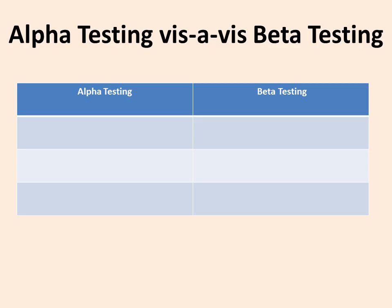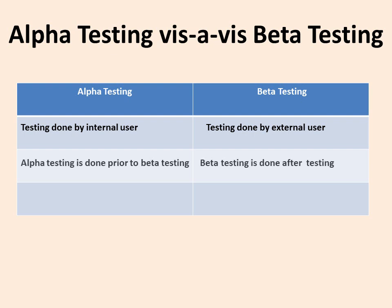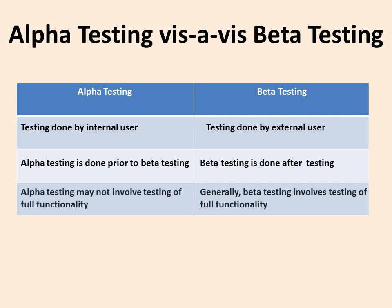Alpha and beta testing: alpha is done by internal users, beta is done by external users. Alpha is done first, and beta follows. Alpha may not involve full functionality testing, whereas beta generally involves testing of full functionality.